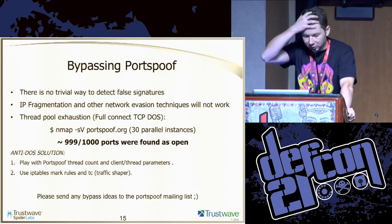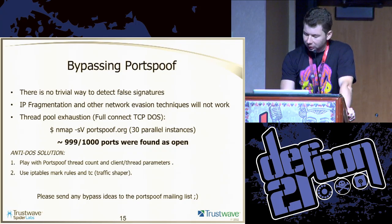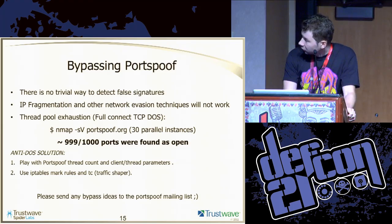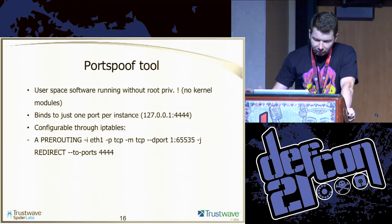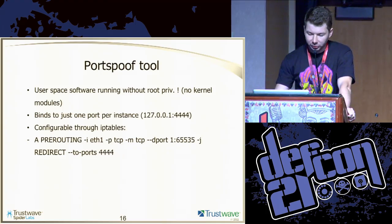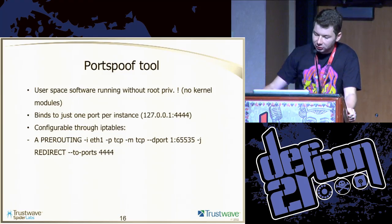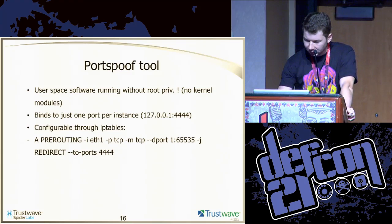You can try to mitigate this by using certain parameters or by using IP tables with a traffic shaper. If you have ideas for bypass, send them to the mailing list and I'll try to fix the software or implement your idea. Shortly about the port spoof tool: it's a kernel module that binds to one port per instance, and you configure it through IP tables by redirecting the ports you want to spoof to localhost.